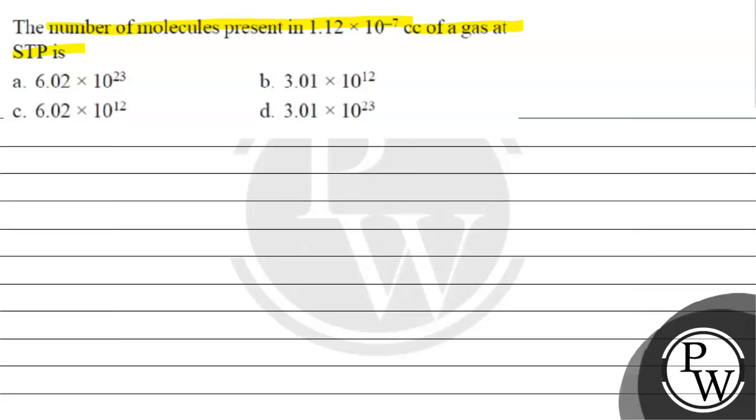Options are given to us. See, we need to find the number of molecules present in 1.12 into 10 raised to the power minus 7 centimeter cube of a gas at STP.